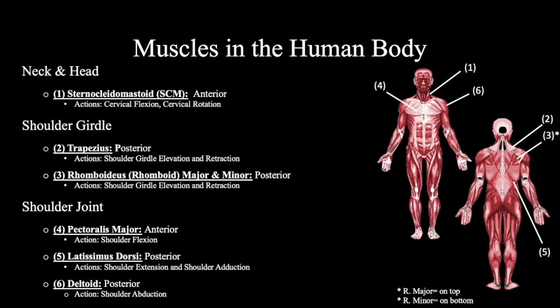Now for the first three muscles in the shoulder joint. The pectoralis major, which is on the anterior side of the body, is responsible for shoulder flexion. The latissimus dorsi, located on the posterior side of the body, is responsible for shoulder extension and shoulder abduction. And finally, the deltoid, also located on the posterior side of the body, is responsible for shoulder abduction.